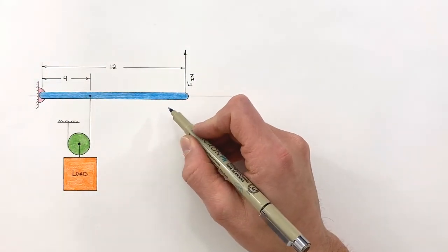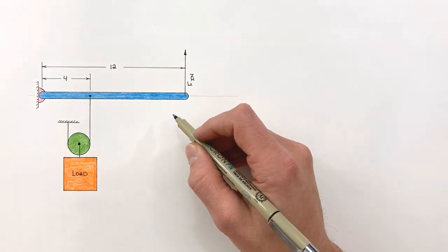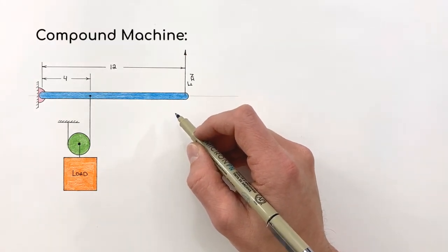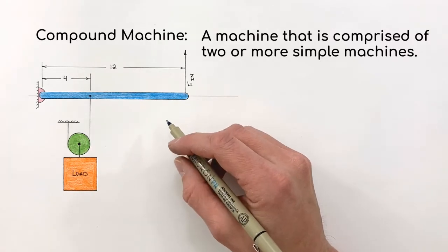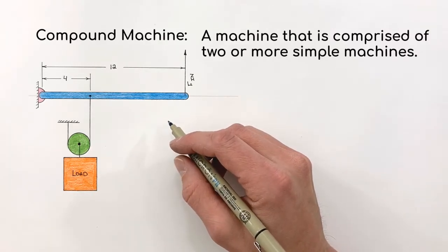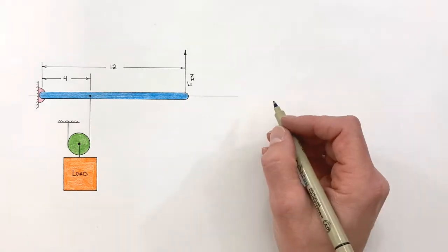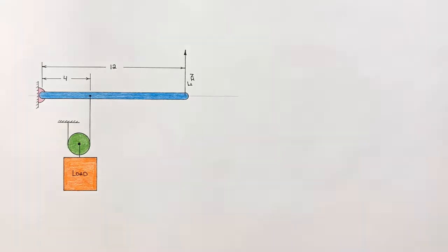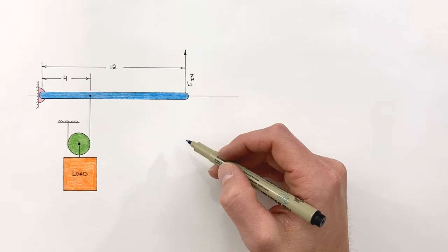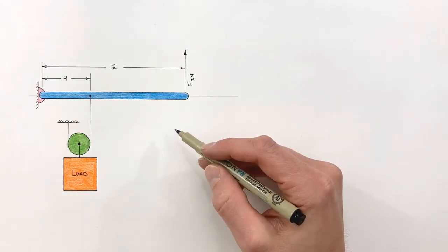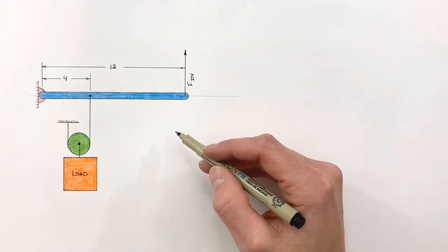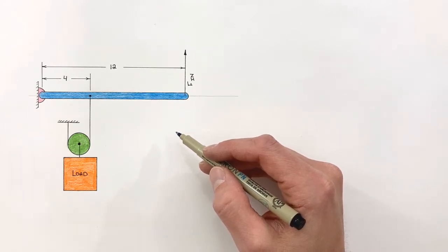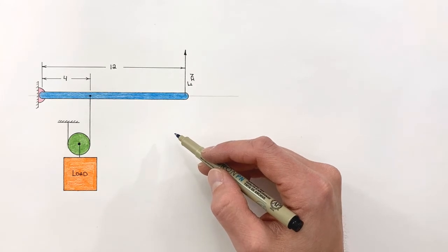Today we're talking about compound machines. A compound machine is defined as a machine that is comprised of two or more simple machines. Any time we combine multiple simple machines, we wind up with what we call a compound machine. This could be something like a wheelbarrow, a wine opener, or a crane — those are all simple machines that have been combined into a compound machine.